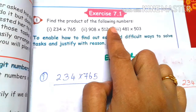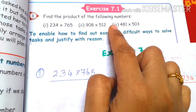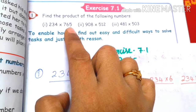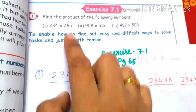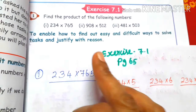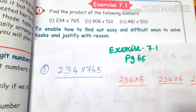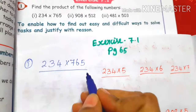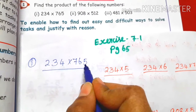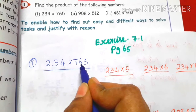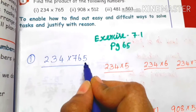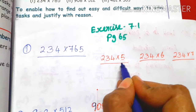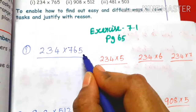Exercise 7.1: Find the product of the following numbers. So 234 into 765 — a 2, 3-digit number multiplication. You will see two 3-digit numbers. So first step: what do you do? First — ones, tens, hundreds. So first, ones: you will see 234 into 5.